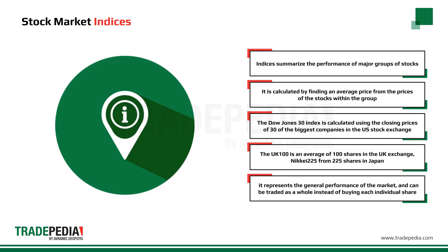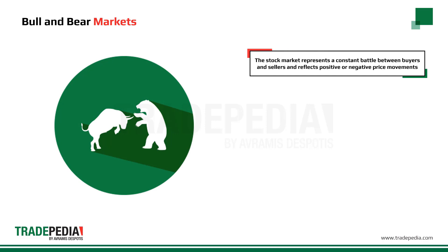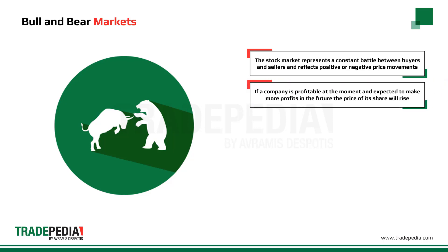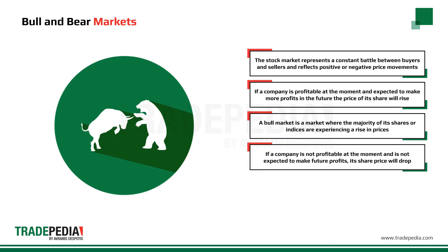The stock market represents a constant battle between buyers and sellers and reflects positive or negative price movements. If a company is profitable and expected to make more profits in the future, the price of its shares will rise. A bull market is a market where the majority of its shares or indices are experiencing a rise in prices.